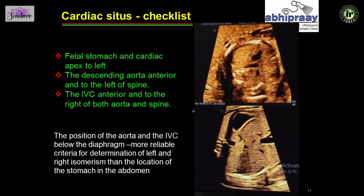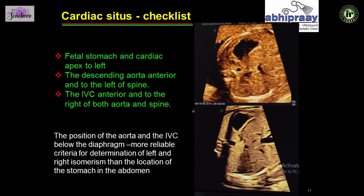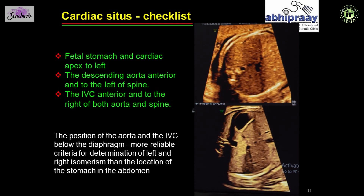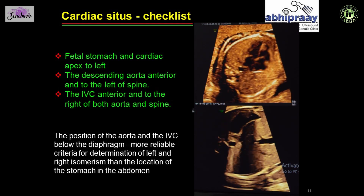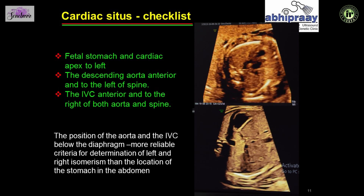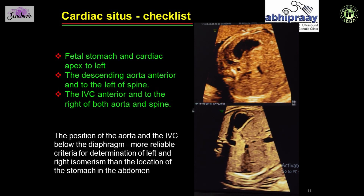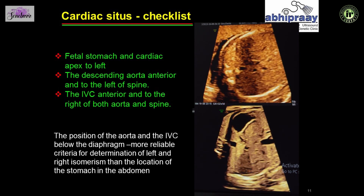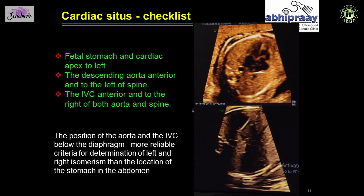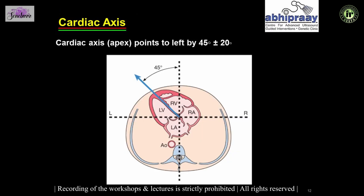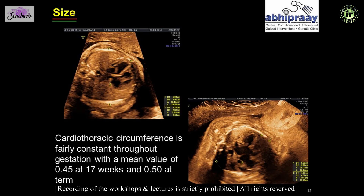The checklist for situs requires that the stomach and the cardiac apex are to the left, the aorta is posterior and to the left of the spine, and the IVC is slightly anterior and to the right of both the aorta and the spine. The relation of the aorta and the IVC is of paramount importance. The cardiac axis is slightly pointing to the left by 45 degrees, with a range of 20 degrees either way.